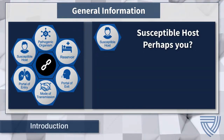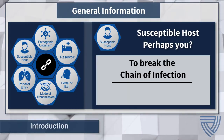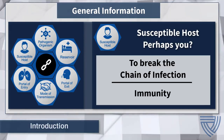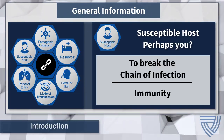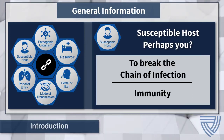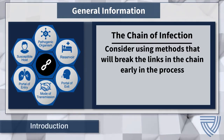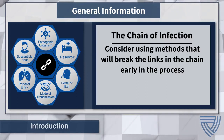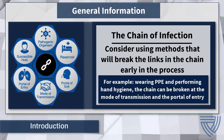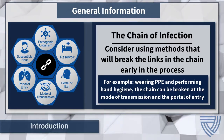A susceptible host refers to a person who does not have the ability to fight off the invading pathogen. To break the chain of infection at this point would require the potential host to have immunity to the pathogen in question. In certain situations, immunity can be acquired naturally as a response to past infections, or it can be artificially acquired by vaccination. Health care workers caring for patients with COVID-19 can break the chain of infection at the mode of transmission and portal of entry by wearing the appropriate personal protective equipment.